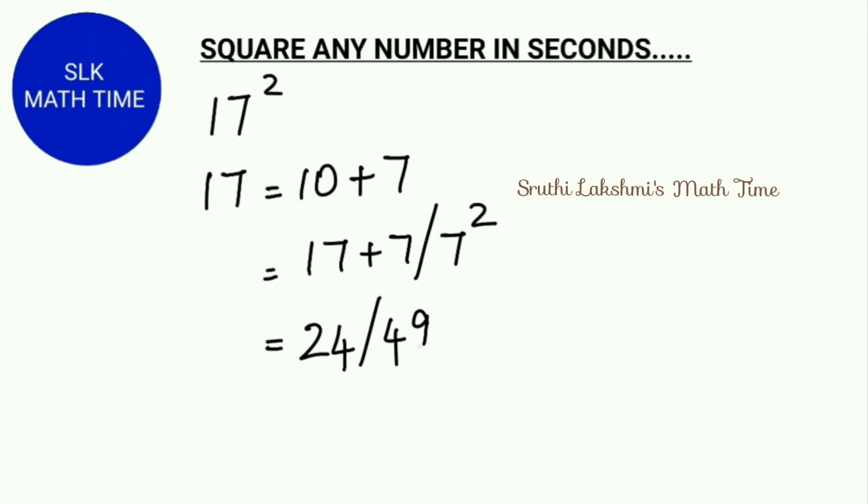Since the base is 10, we have to have only one digit in the right hand side. So we do 4 plus 4 which gives us 8. So the answer is 289. So 17 square is 289. See how simple this trick is.